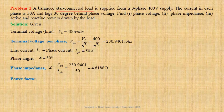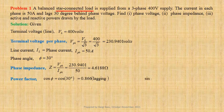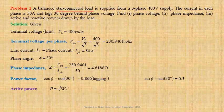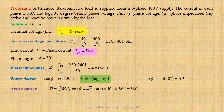Power factor of the load: cos phi equals cos 30 degrees, that is equal to 0.866 lagging. Sin phi equals sin 30 degrees, that is equal to 0.5. Expression for active power for three-phase load: P equals root three times VL into IL cos phi. Using values we get root three into 400 into 50 into 0.866, giving us approximately 30,000 watts.